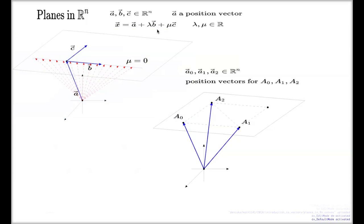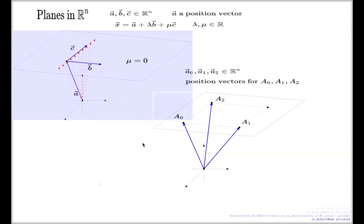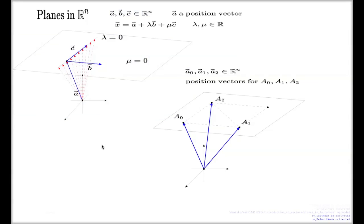Similarly, you can set λ to 0, in which case vector b no longer contributes to your x vector. In that case you get another line within your bigger plane, corresponding to the choice λ=0 with μ running freely.